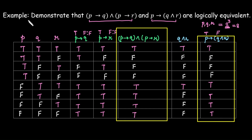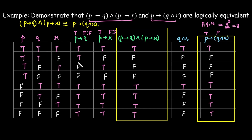Since the truth values are the same in every case across both columns, we can conclude that these two statements are logically equivalent. We write: P implies Q AND P implies R is logically equivalent to P implies (Q AND R). This is how we use truth tables to determine whether two compound propositions are logically equivalent.